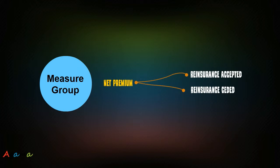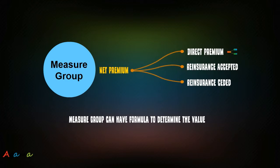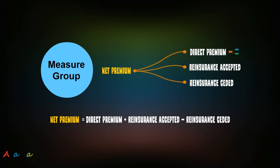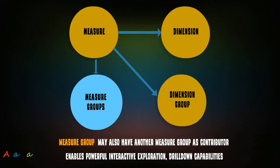For example, creating a measure group called net premium: measures such as reinsurance, ceded, and seeded are mapped to the net premium group. Direct premium is also mapped to net premium. The net premium value can be determined by applying a formula — you can associate a formula to calculate net premium based on its contributors. A measure group may also have another measure group as a contributor. This enables powerful interactive exploration and drill-down capabilities by business users without technical know-how.